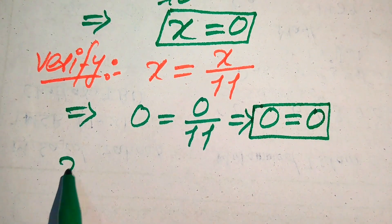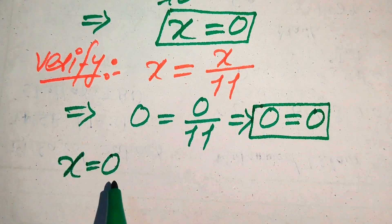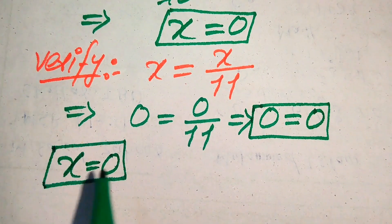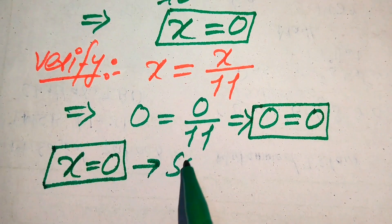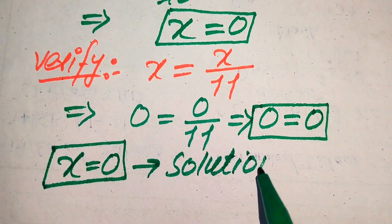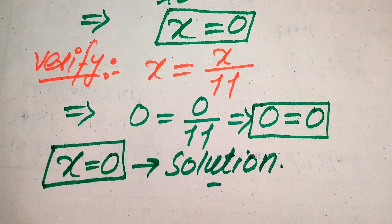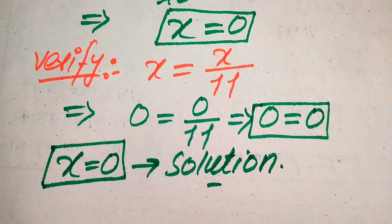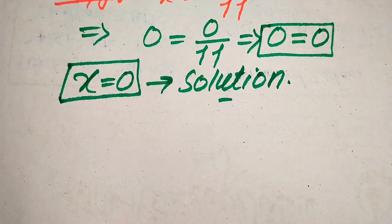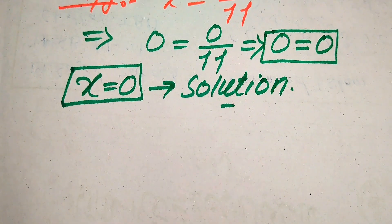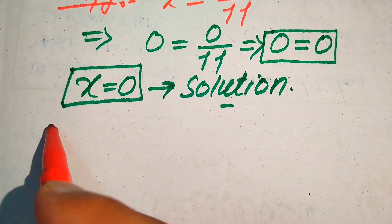This shows that x equals 0 satisfies the given equation. So we conclude that x equals 0 is the only solution of the given equation. The roots which do not satisfy the given equation are called extraneous roots, and the roots which do satisfy the equation are called solutions. So x equals 0 is the solution.